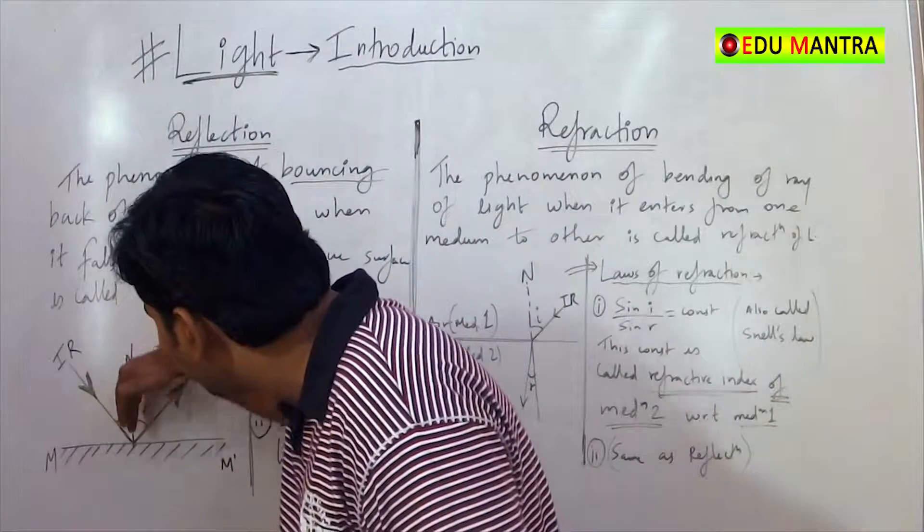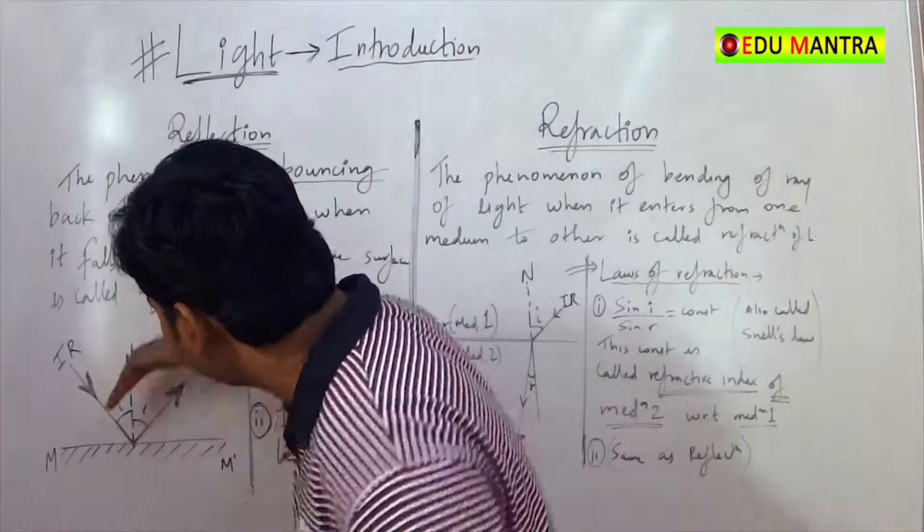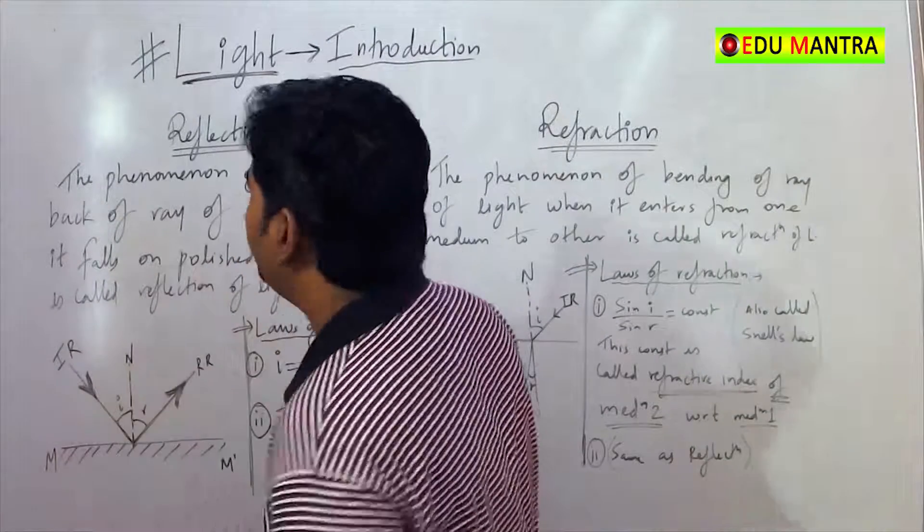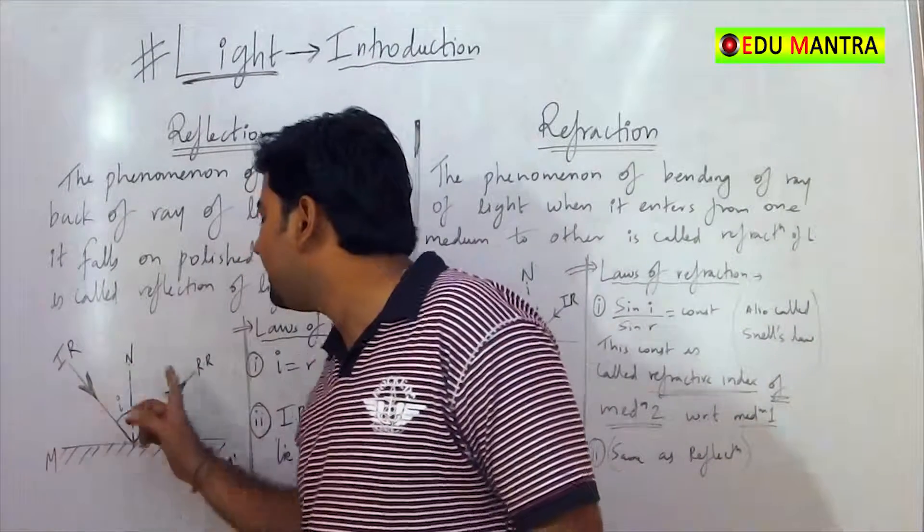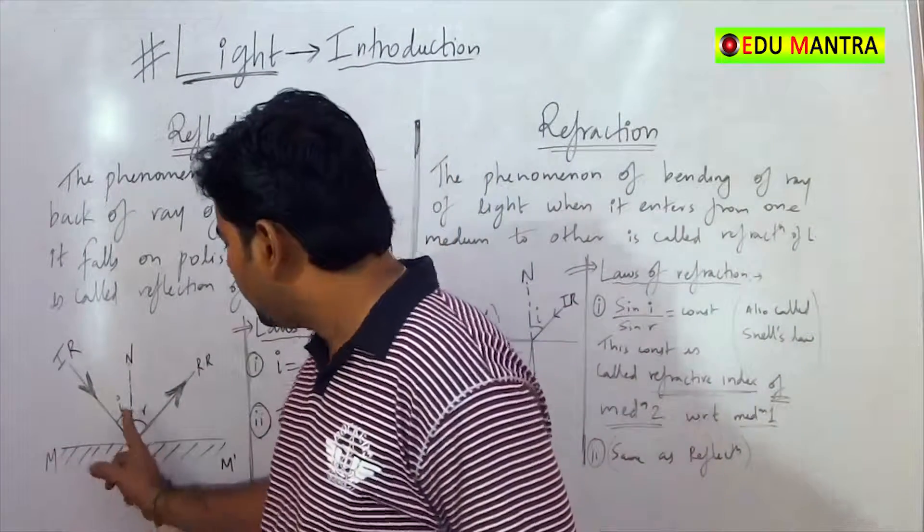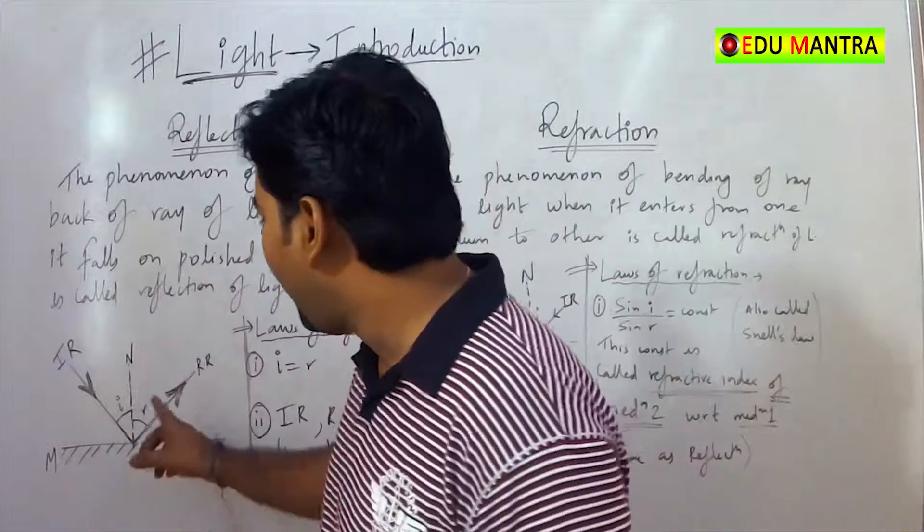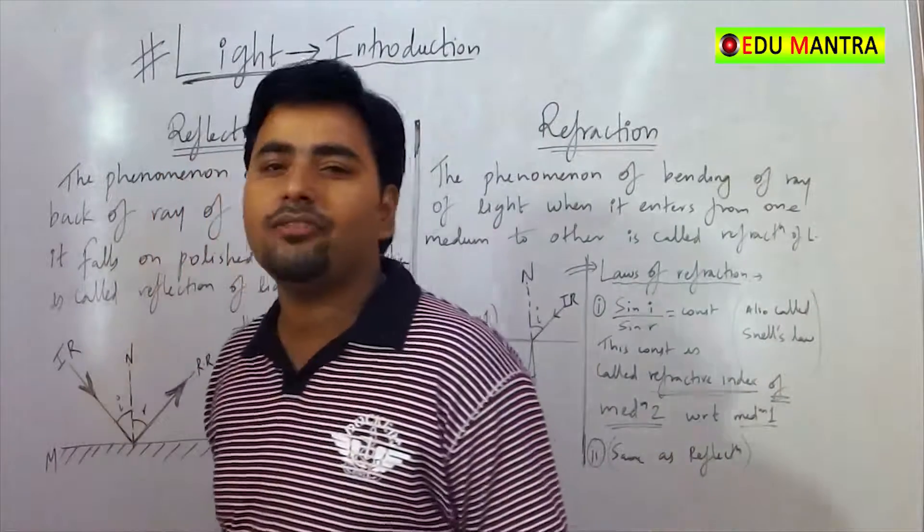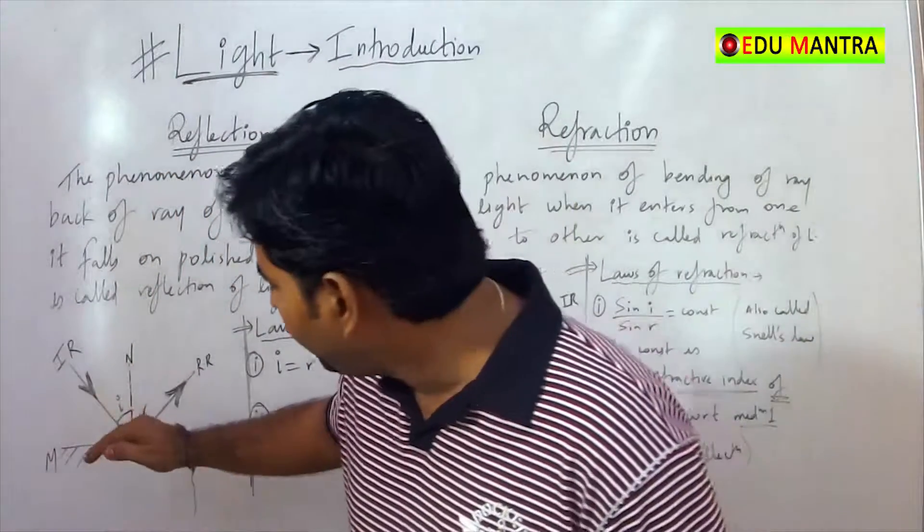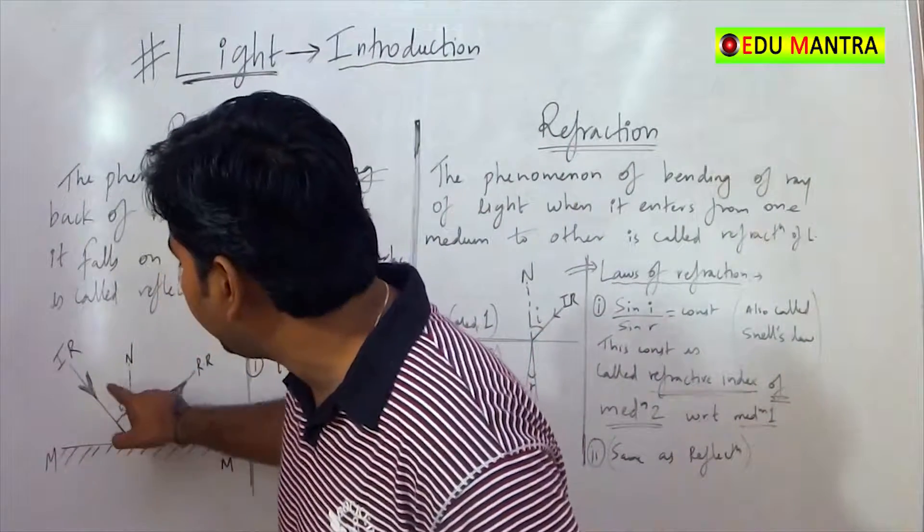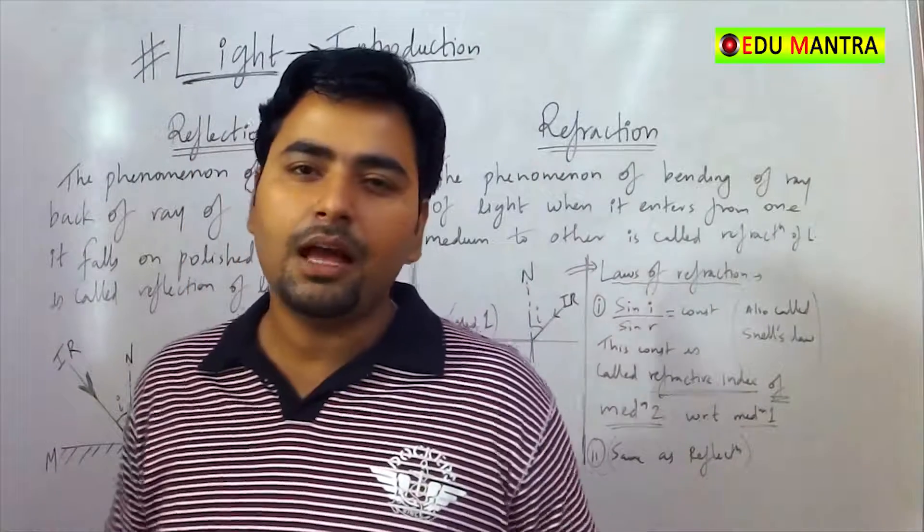At the point we have perpendicular drawn to this surface, so this is your normal. Incident ray, reflected ray. This incident ray with normal, the angle formed is called angle of incidence. And reflected ray with normal, the angle formed is called angle of reflection. So this is the angle of reflection, this is the angle of incidence.